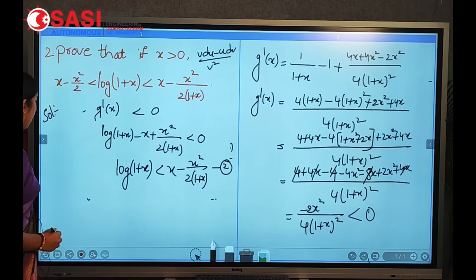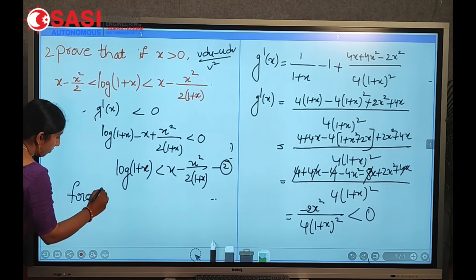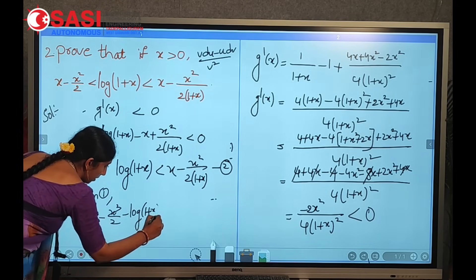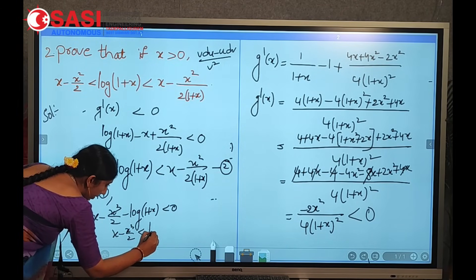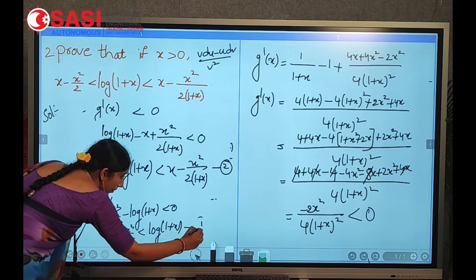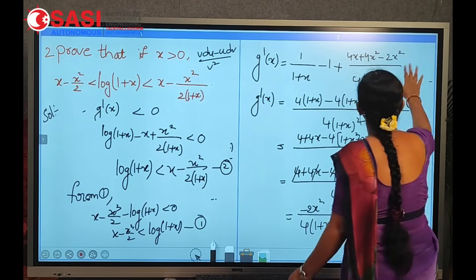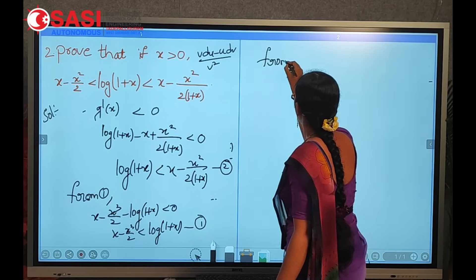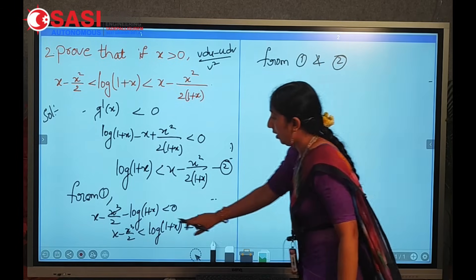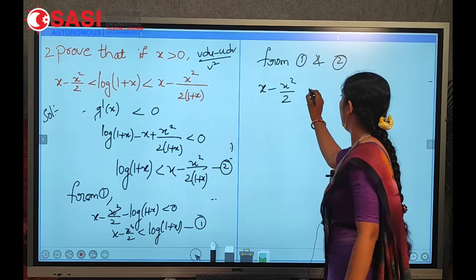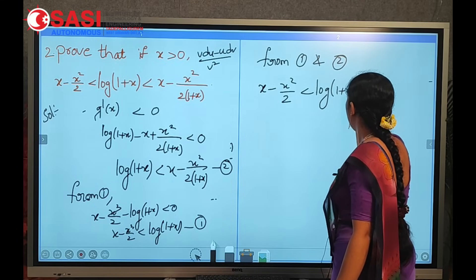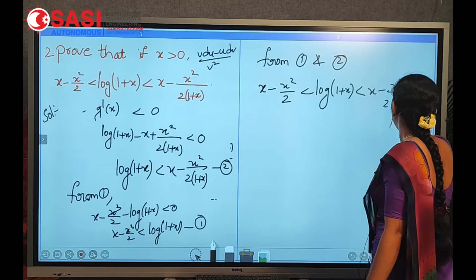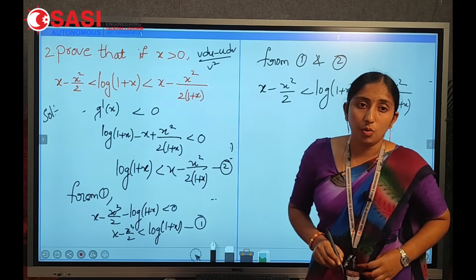Combining conditions 1 and 2: from condition 1, x − x²/2 < log(1 + x). From condition 2, log(1 + x) < x − x²/[2(1 + x)]. Therefore: x − x²/2 < log(1 + x) < x − x²/[2(1 + x)]. This is the condition we had to prove.